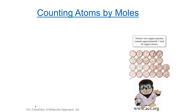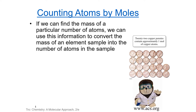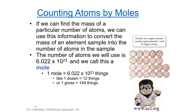Because atoms are very small, we need a way to handle large amounts of them in the lab. The way that we do this is we use a number called the mole. This allows us to convert the mass of elements into the number of atoms in a sample. The number of atoms contained in a mole is 6.022 times 10 to the 23rd. This is a counting number, just like a dozen or a gross.